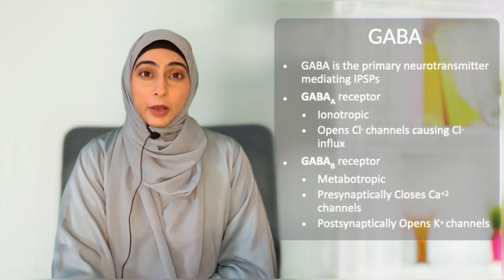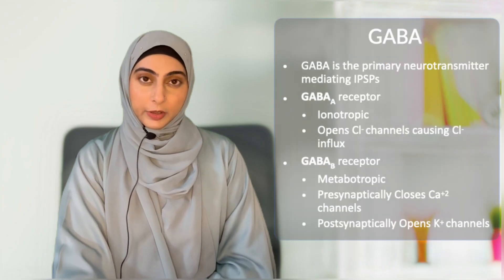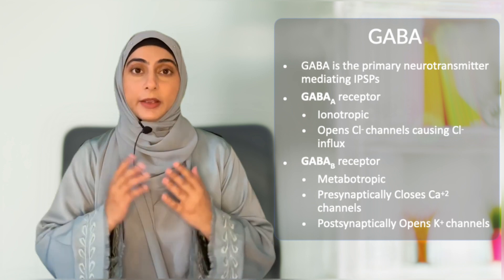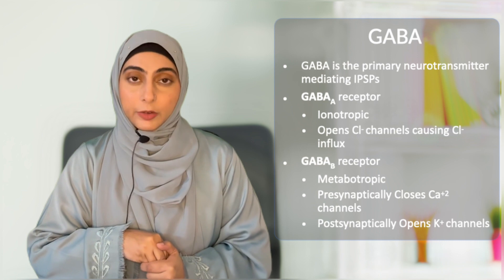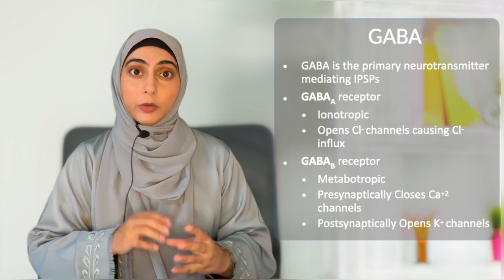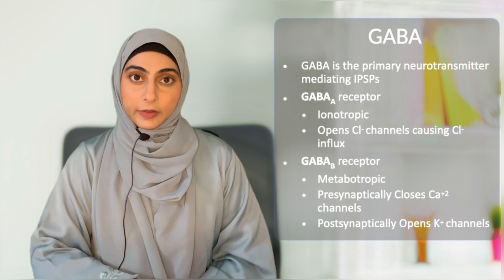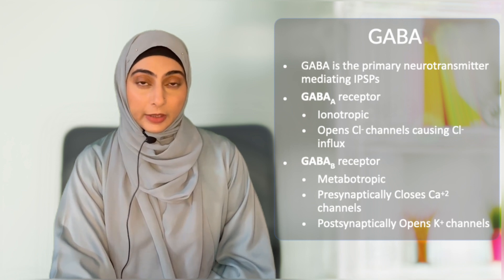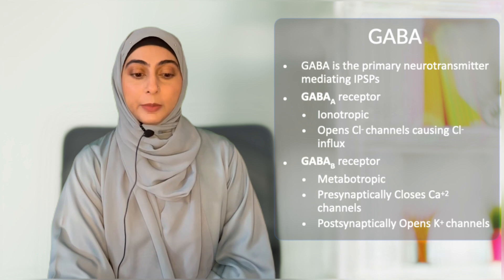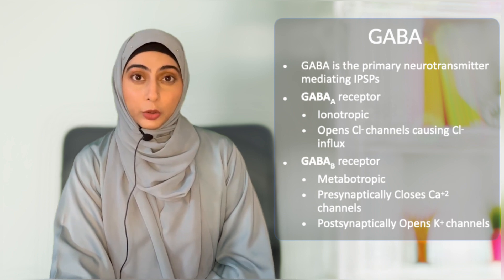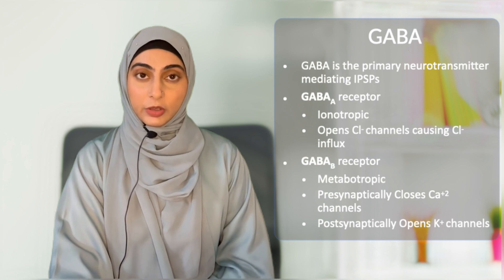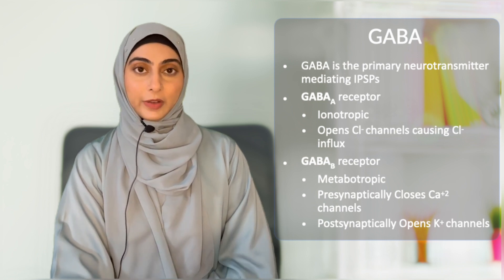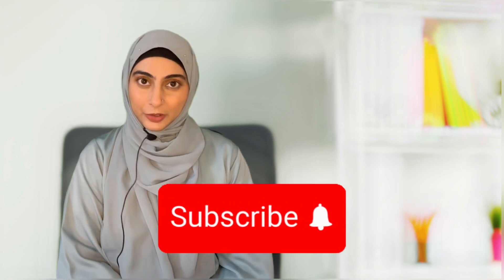GABA is the primary inhibitory neurotransmitter in the brain and acts through two kinds of receptors. GABA-A is a ligand-gated ion channel — when GABA binds, it causes opening of the channel resulting in chloride ion influx. GABA-B is a metabotropic G-protein coupled receptor which presynaptically results in closure of calcium channels and postsynaptically results in opening of potassium channels. Both of these actions discourage depolarization and increase hyperpolarization, resulting in inhibition of synaptic transmission. I hope this introduction will help you understand the basic core concepts of CNS pharmacology. If this video helped you, please subscribe — thank you.